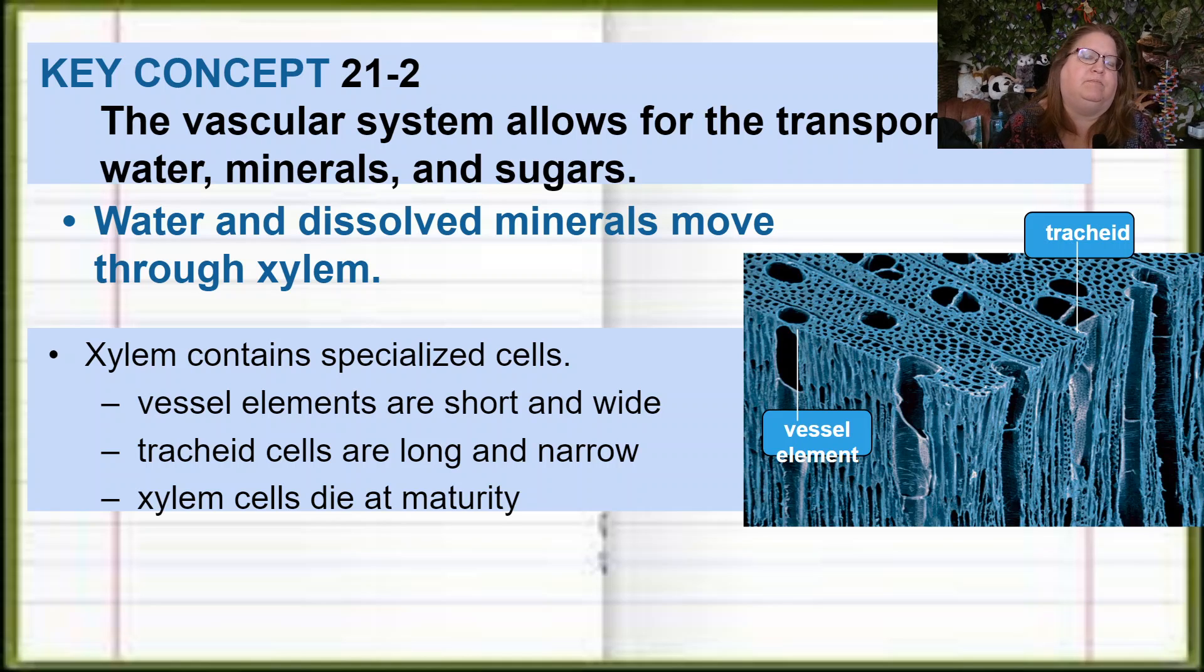That's going to be the xylem and the phloem. Now the xylem is going to be dead at maturity and it has two different cell types. As the cells get bigger and get to their final shape they die, and what's left is the cell wall.